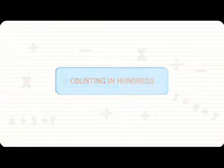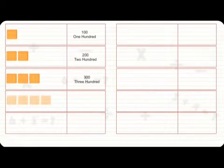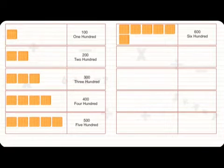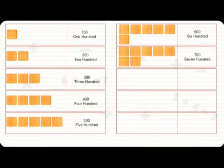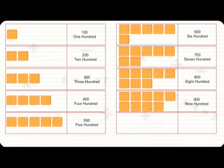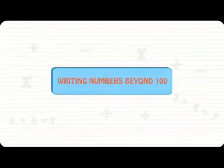In hundreds: 100, 200, 300, 400, 500, 600, 700, 800, 900, 1000. Writing numbers beyond 100.